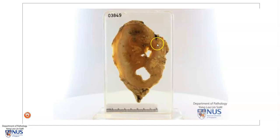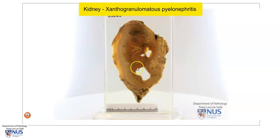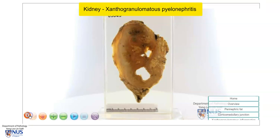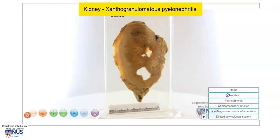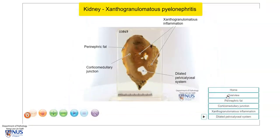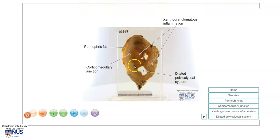Hello, this is a virtual pathology specimen of a slice of the kidney from a case of xanthogranulomatous pyelonephritis. Let's orientate ourselves. Here we have the perinephric fat, this is the cortex of the kidney, and this is the area of the medulla with the renal pelvis.